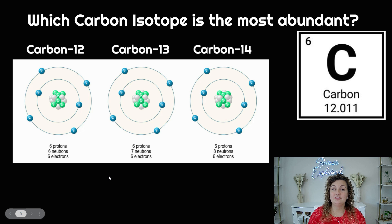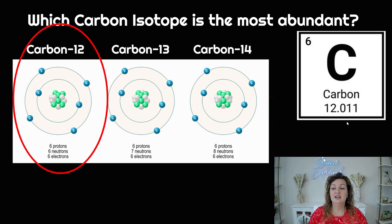All right, which carbon isotope is the most abundant? Let's try it again. Pause this video and see if you can figure it out. Okay, so we have our square here and we can see that it is 12.011. So it's most likely going to be very close to 12.